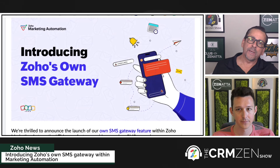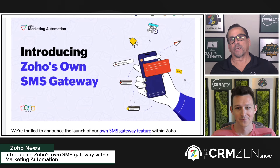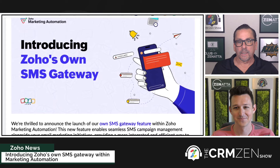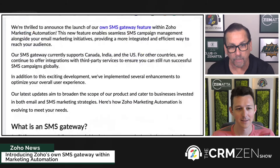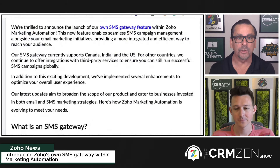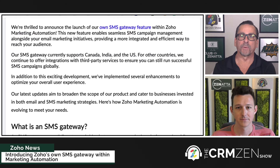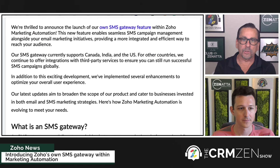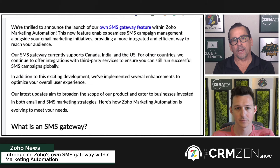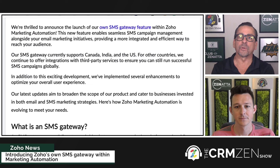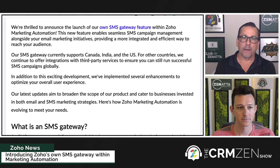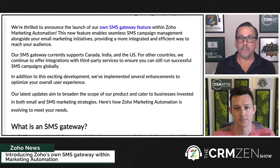Zoho now has their own SMS gateway inside of Marketing Automation. Marketing Automation is Zoho's marketing automation tool, not to be confused with Zoho Campaigns, even though they're similar. So instead of having to use a third-party gateway like Twilio, Zoho has their own gateway feature, which is now available in Canada, India, and the US.